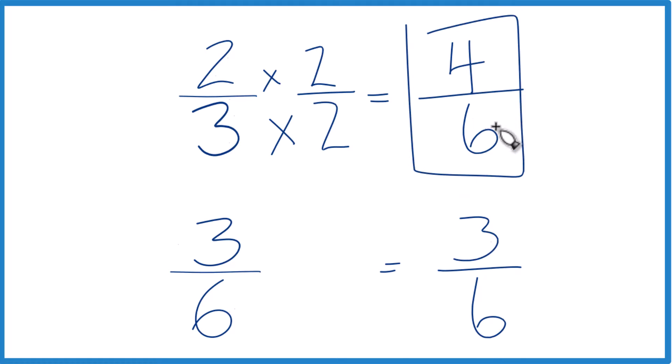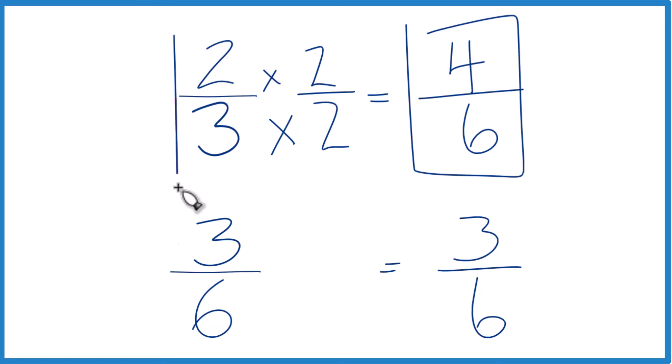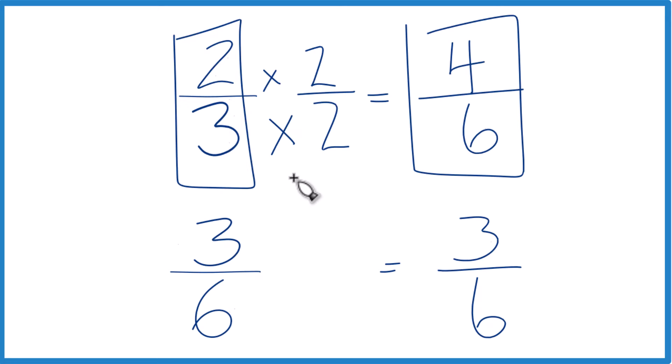And it's one-sixth greater. So because these are equivalent fractions, two-thirds is greater than three-sixths as well. That's it. This is Dr. B — thanks for watching.